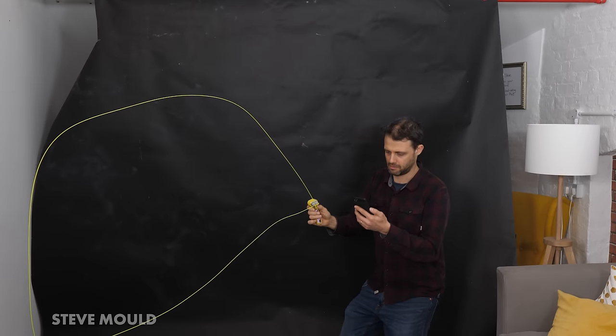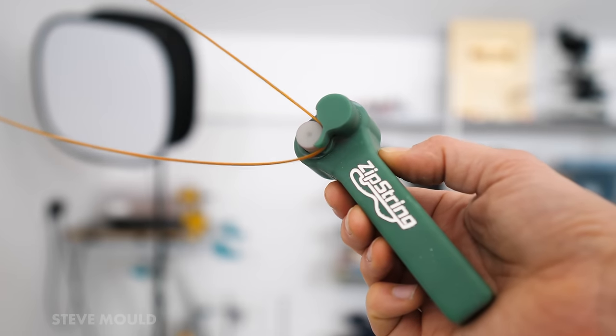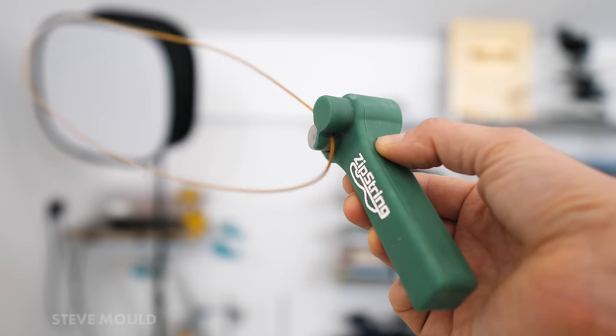And amazingly they emailed me first saying would you like one. I want to be clear they're not paying me at all for this video. In fact, I insisted on paying them for the prototype, so this isn't an advert, but I will leave a link in the description where you can pre-order one. It's called a zip string.